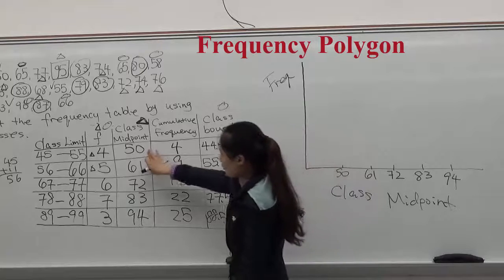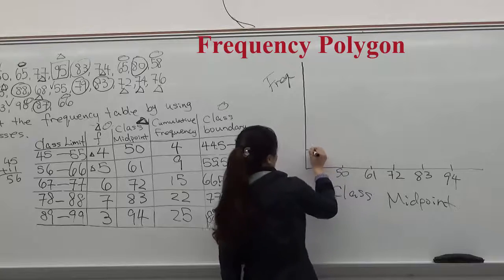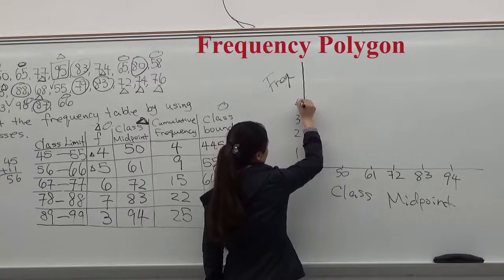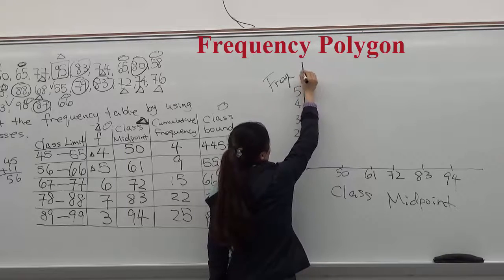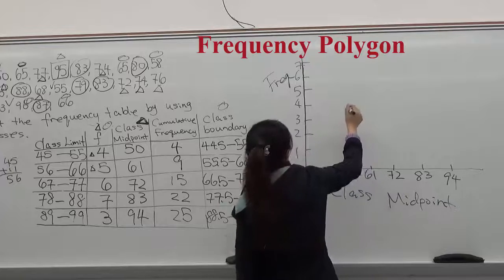Frequency of first class midpoint of 50, that's 4. So I'm going to label the numbers on the Y first. 3, 4, 5, 6, 7. So 50, and it's a 4.